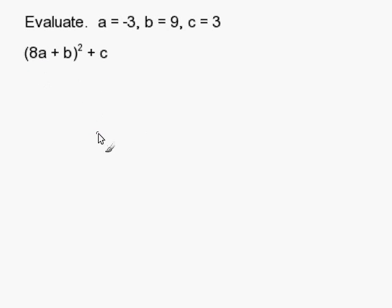So I'm going to rewrite my expression with blanks instead of the variable. For A, I'm going to substitute in negative 3. For B, I'm going to substitute in 9. And for C, I'm going to substitute in 3.